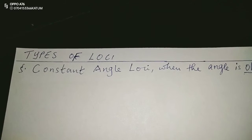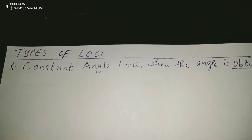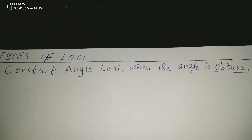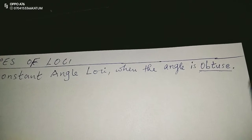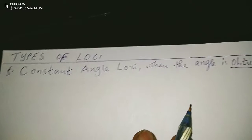Thank you for joining this lesson, continuation of loci. We're going to look at the construction of constant angle loci in a case whereby the constant angle is obtuse. An obtuse angle is an angle which is greater than 90 degrees but less than 180 degrees. So how do we go about this one?